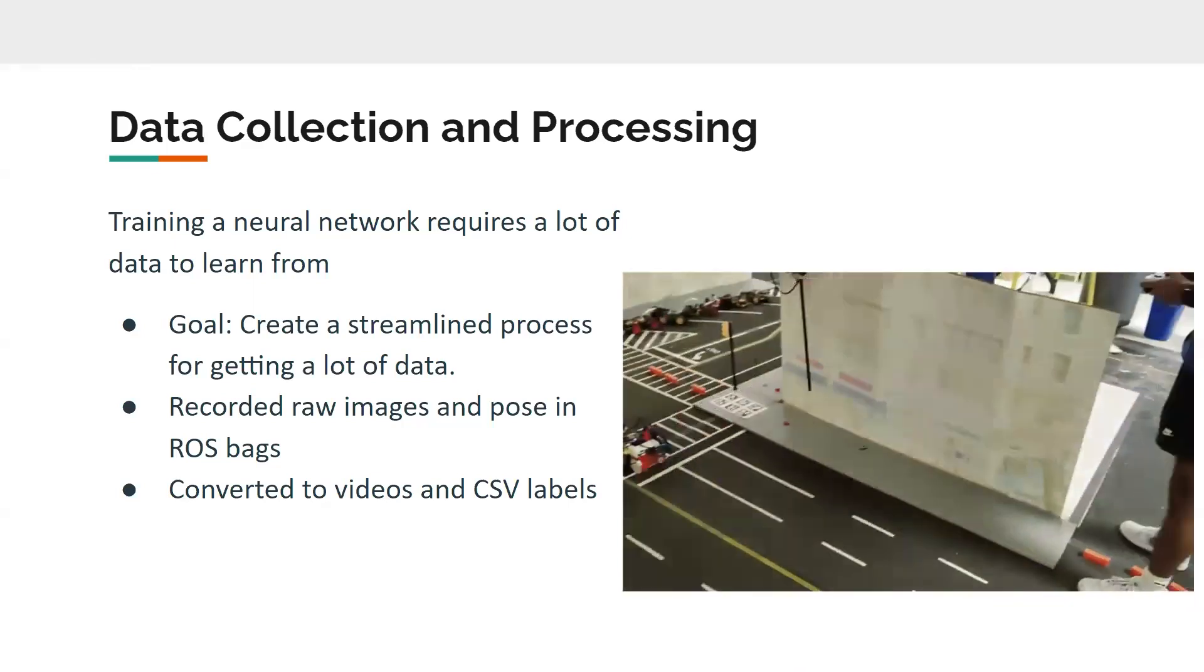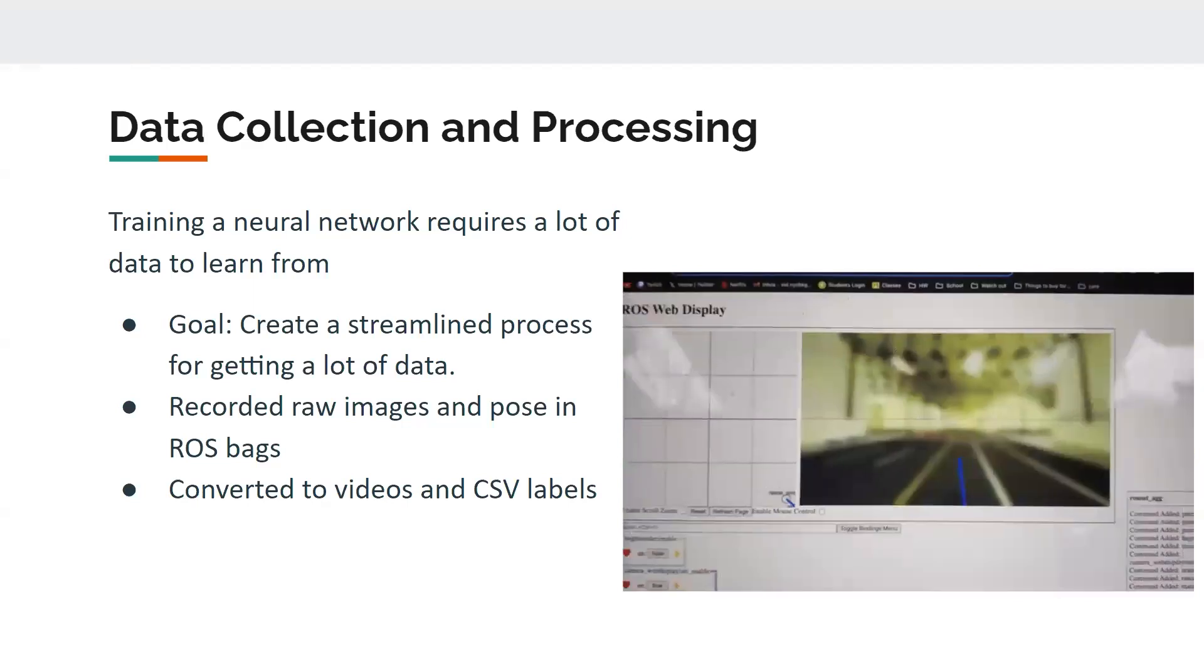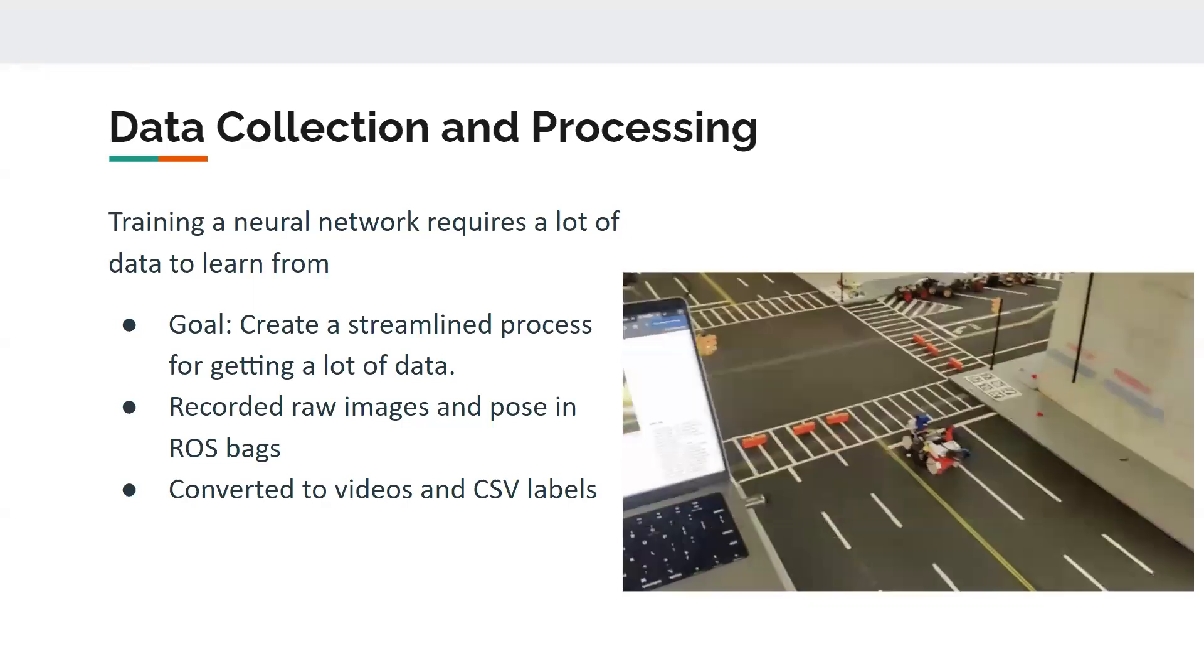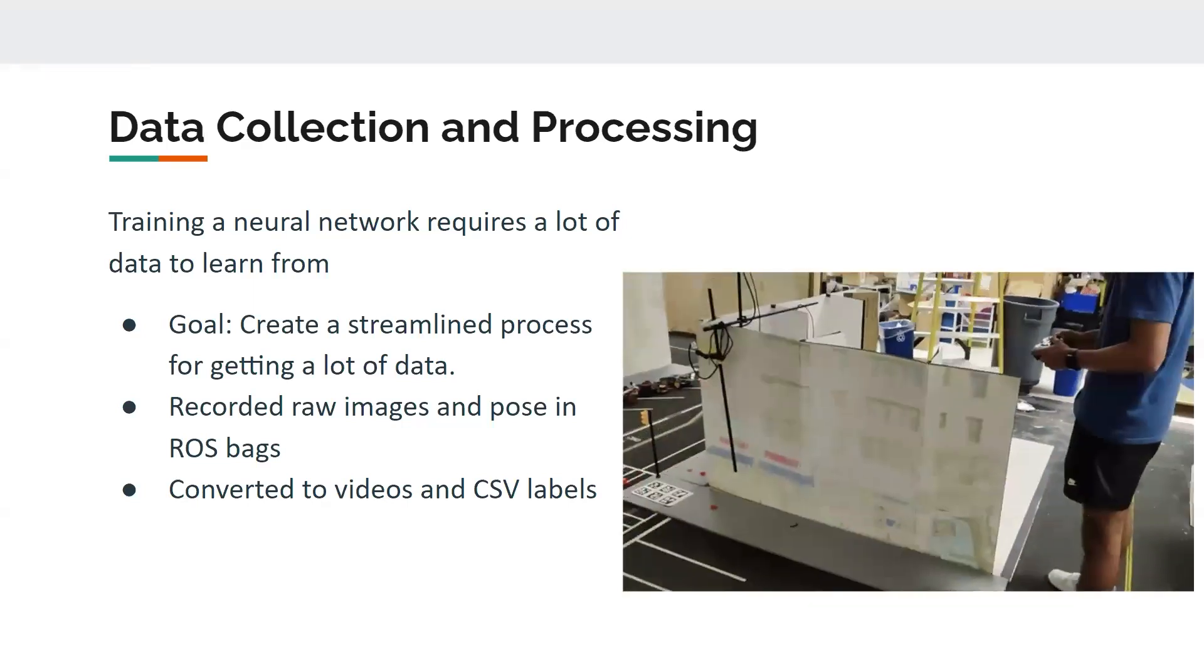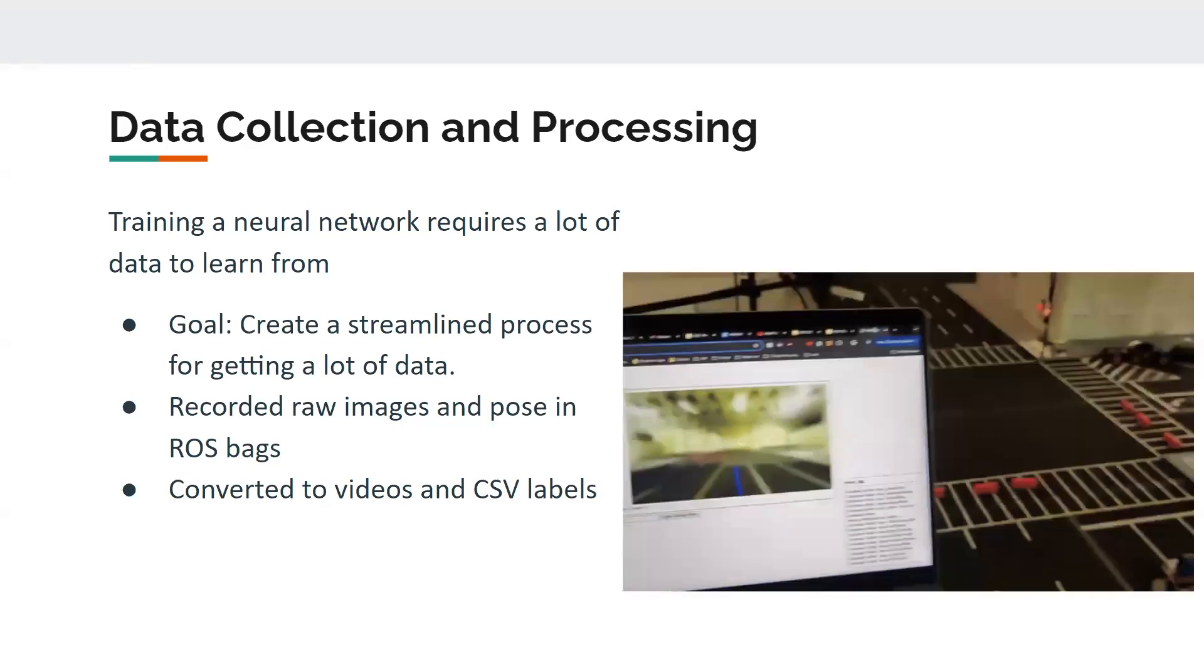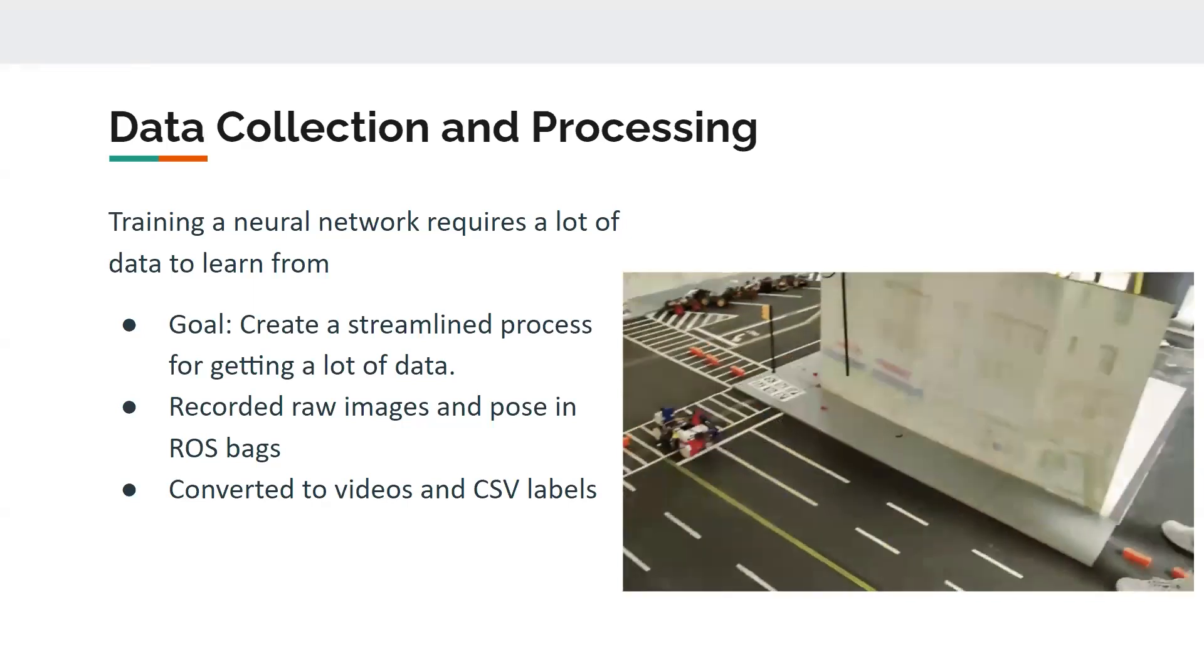And we record raw images, position, and controller inputs in these things called ROS bags, which essentially is just a way to store data. And then we convert those to videos and CSV labels, so it's easier to train the model on.